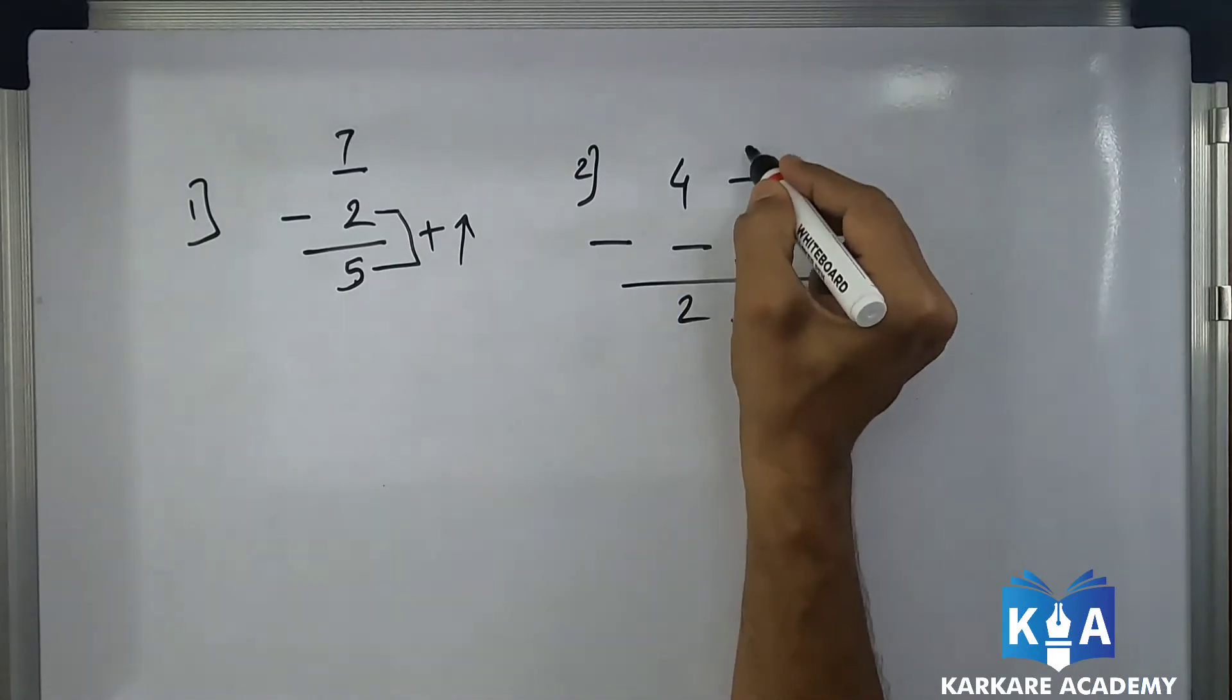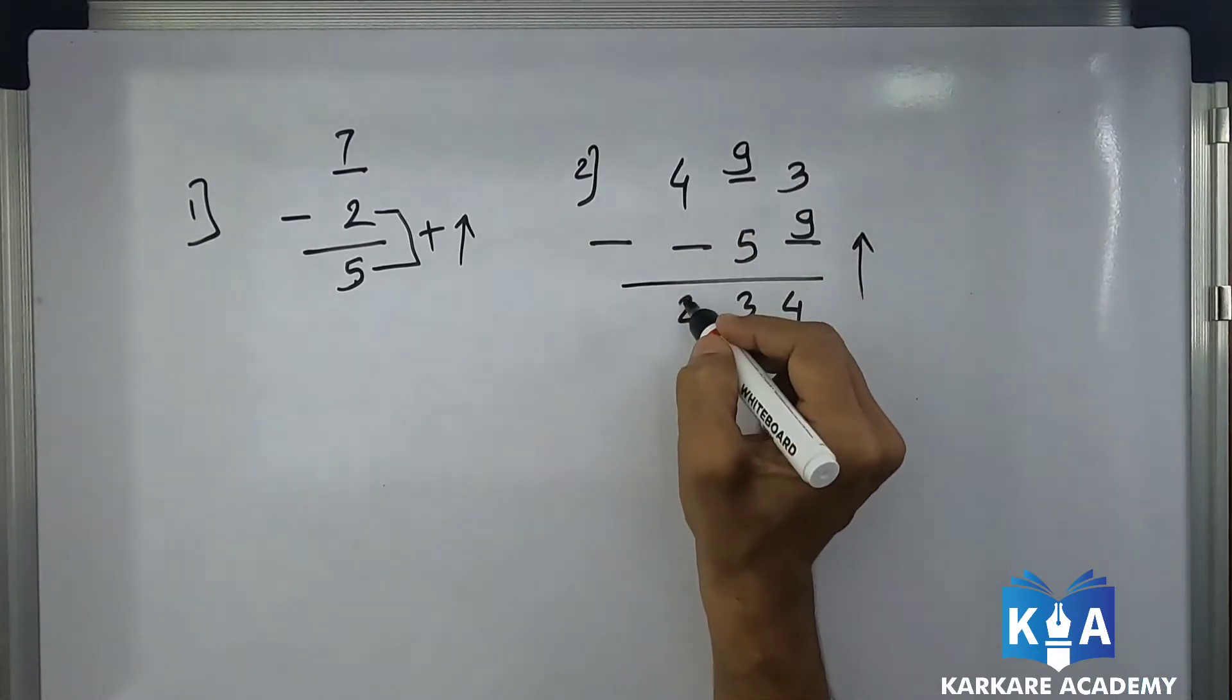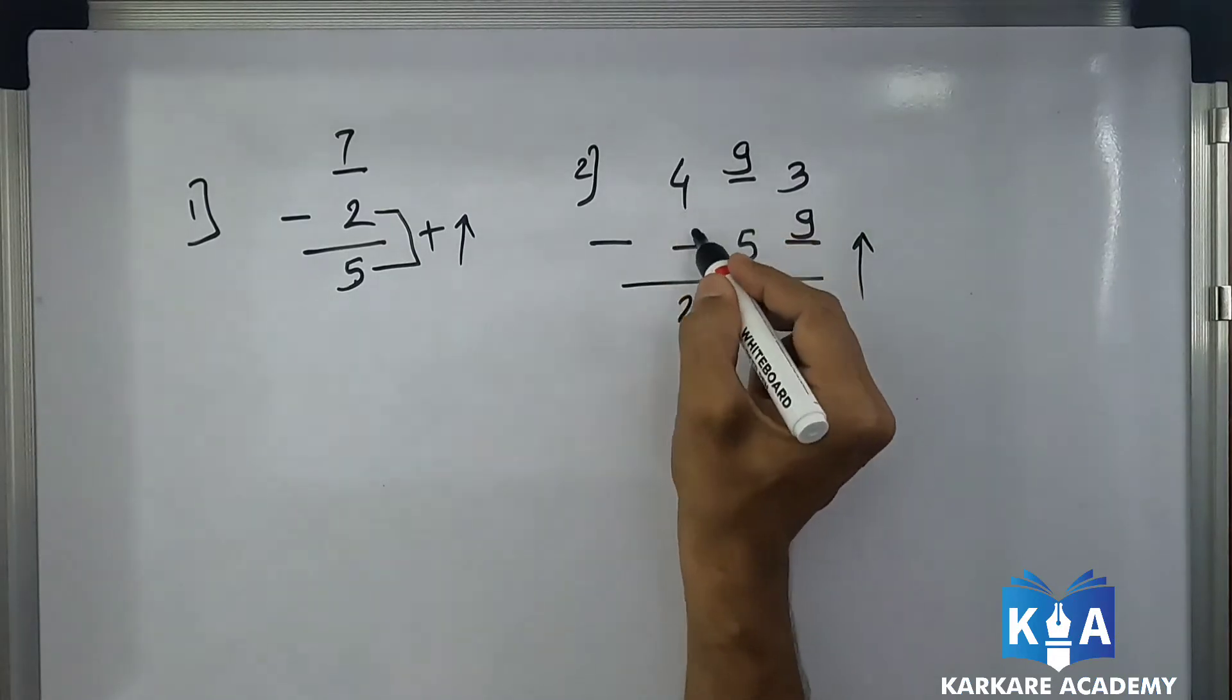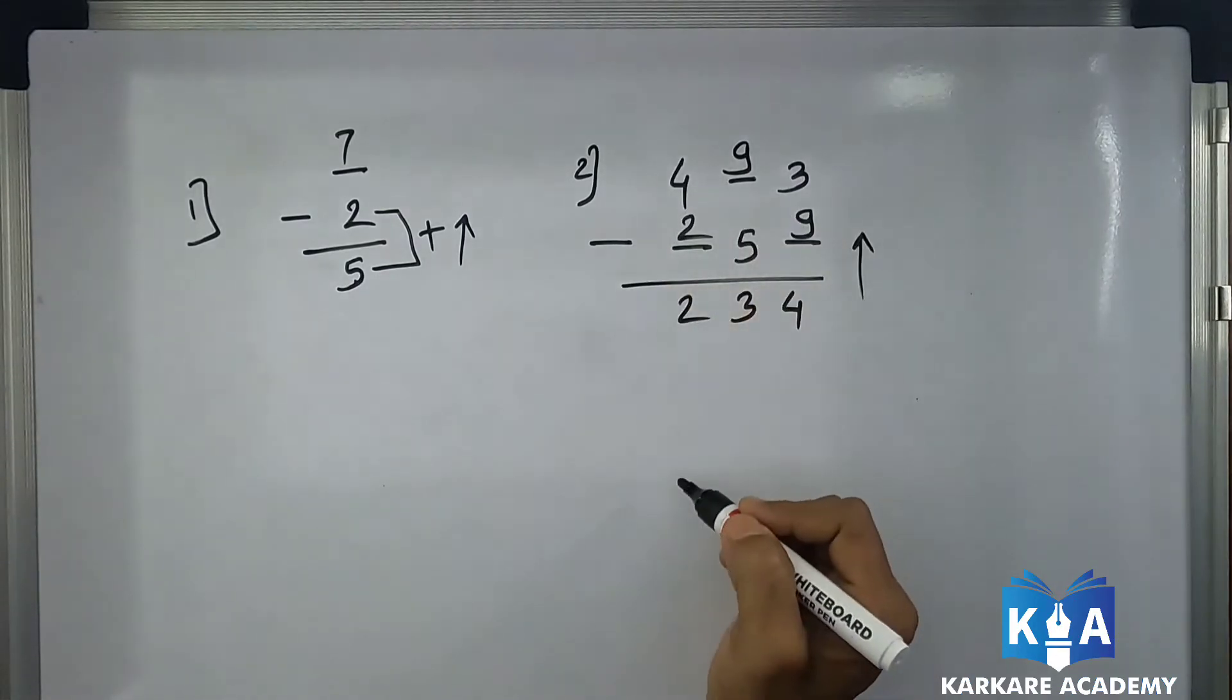3 plus 6 is 9. 9 is a single digit, so this is normal. 2 plus what is 4? So 2. So this is the answer. One more sum for this one.